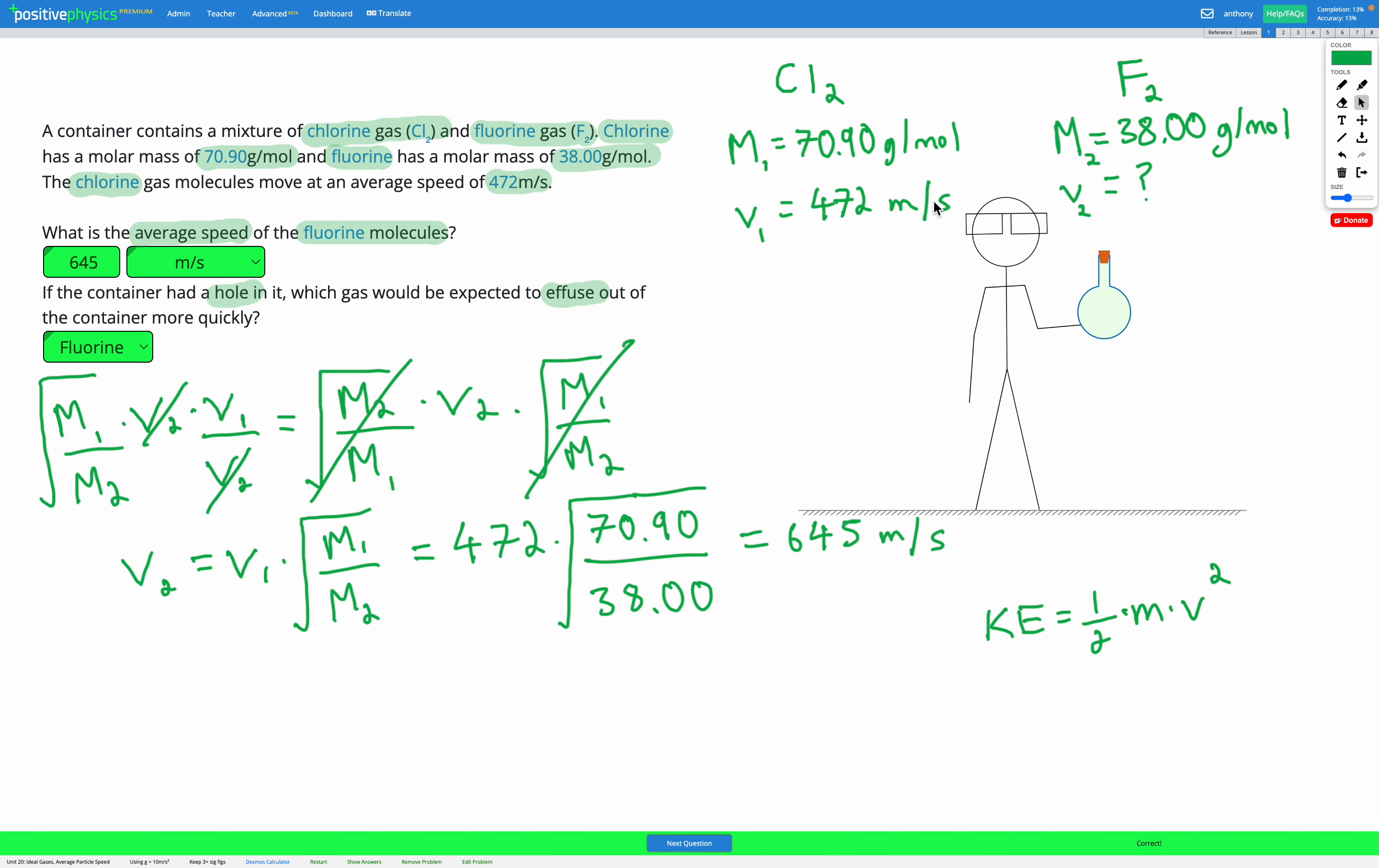So if we have a container with a mixture of gases, the one with the smallest molar mass is going to be the one that moves fastest and therefore the one that effuses most quickly.